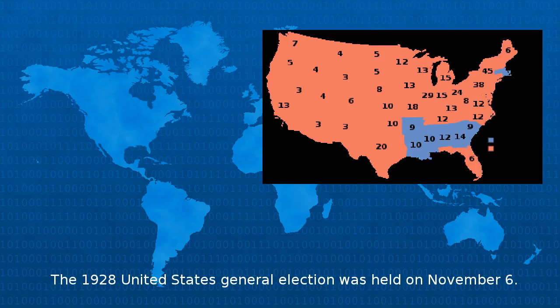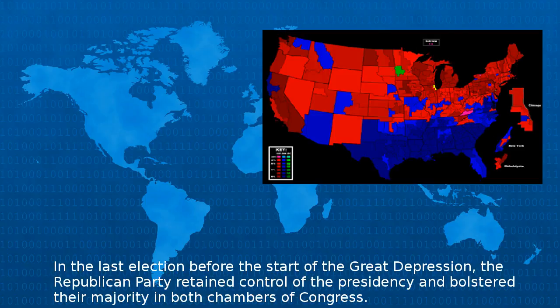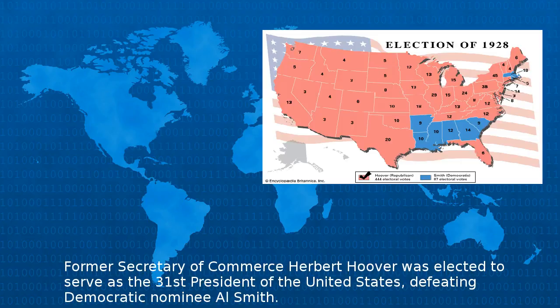The 1928 United States general election was held on November 6. In the last election before the start of the Great Depression, the Republican Party retained control of the presidency and bolstered their majority in both chambers of Congress.